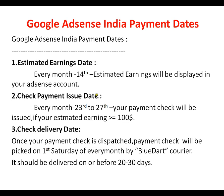First, estimated earnings date: every month on the 14th, estimated earnings will be displayed in your AdSense account. For example, if this month is April, you can check your March earnings by logging into your Google AdSense account on the 14th to see your previous month's earnings.